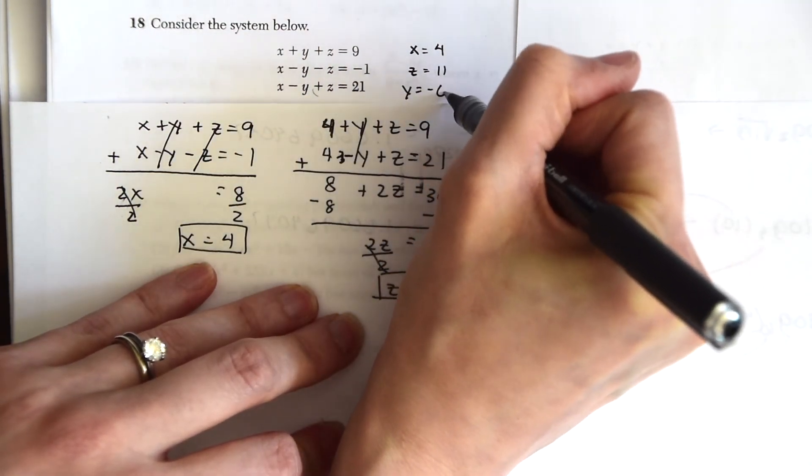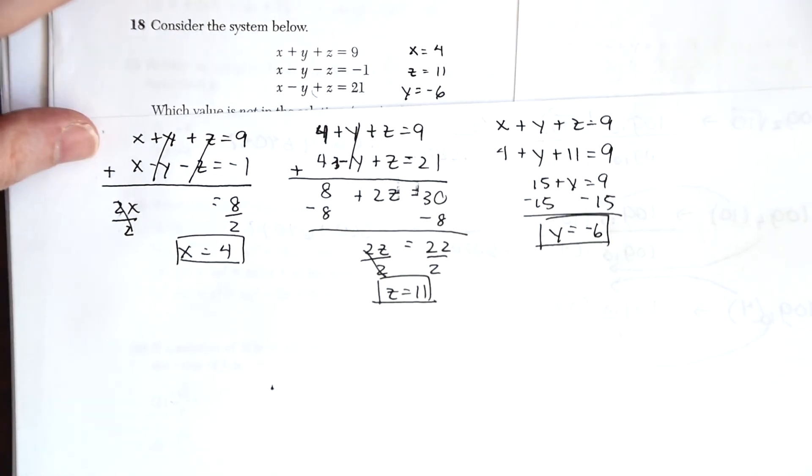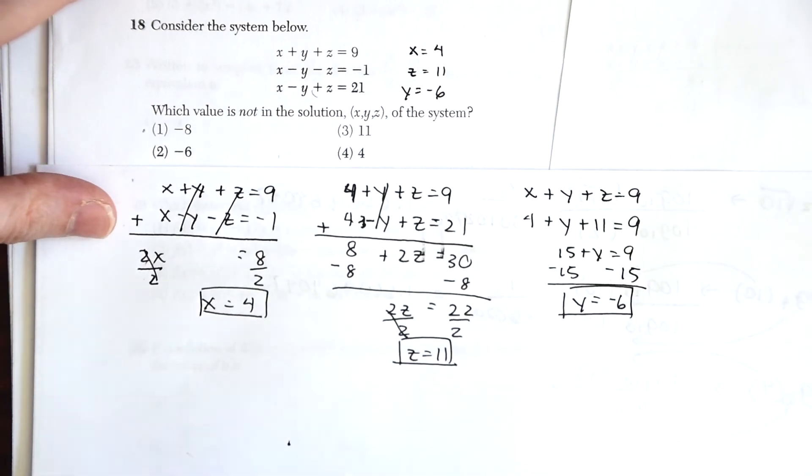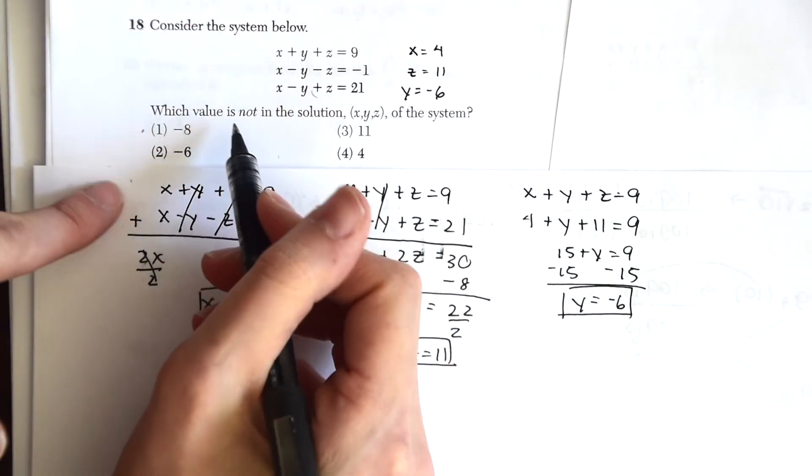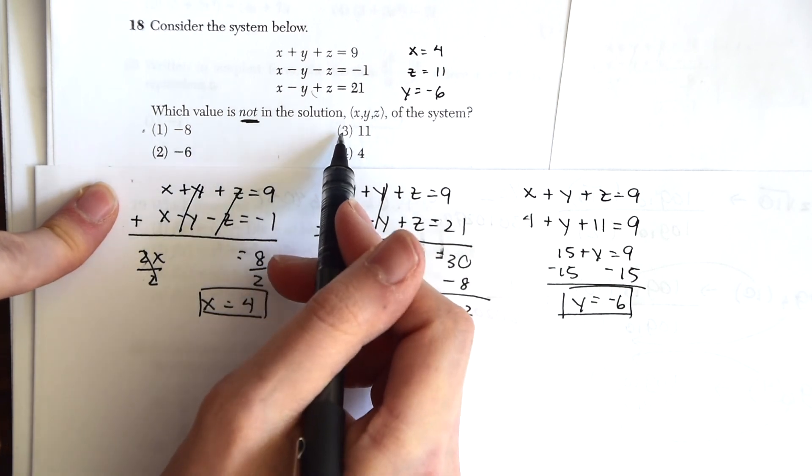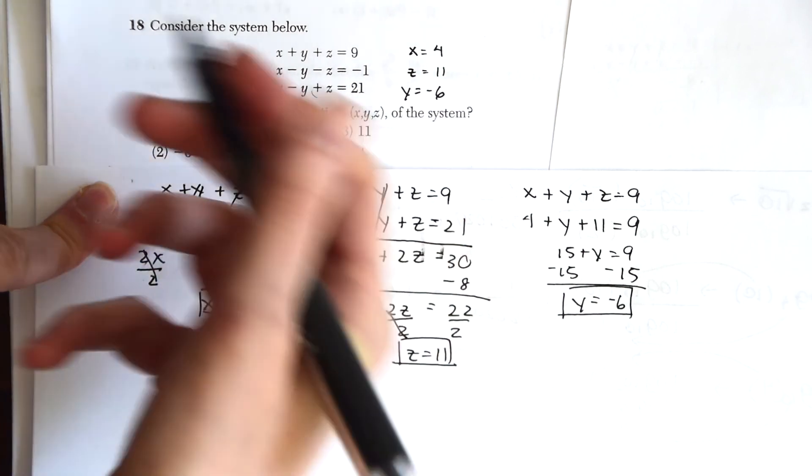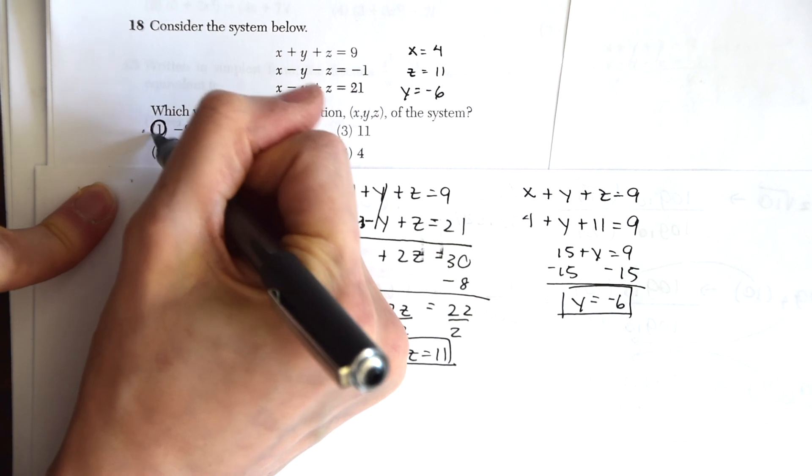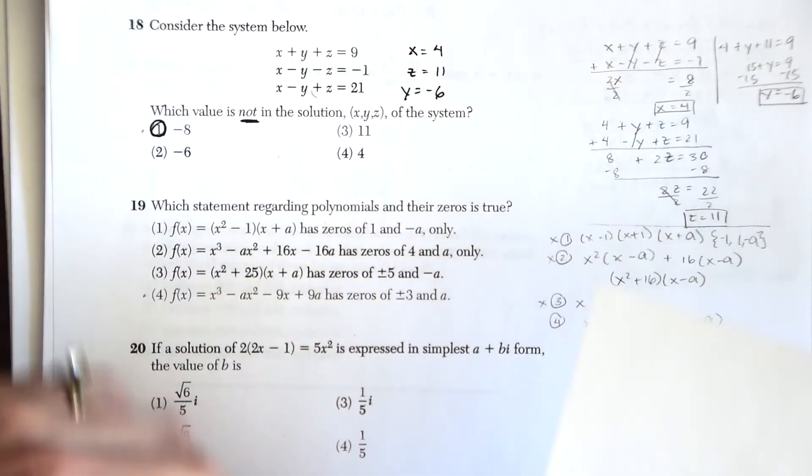So now let's take another look at our choices. So we want to know which value is not in the solution. So we know 4 is in the solution, we know 11 is in the solution, negative 6 is in the solution, but negative 8, choice 1 is not in the solution. So that is our answer.